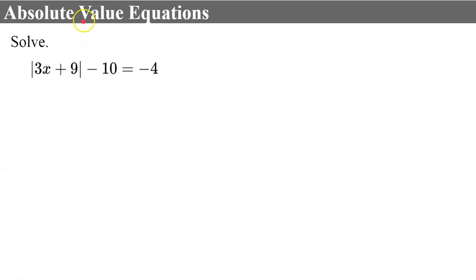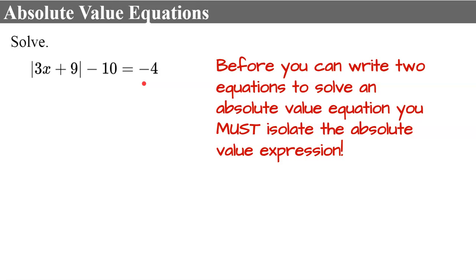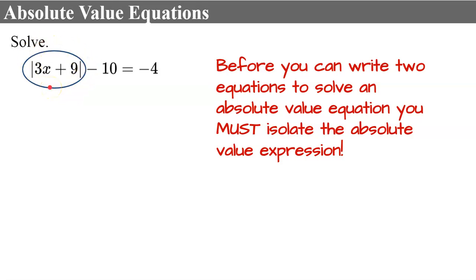Let's look at this absolute value equation: the absolute value expression of 3x plus 9, subtract 10, equals negative 4. What's different about these equations is that before you can write your two equations to solve the absolute value equation, you must first isolate the absolute value expression. The absolute value expression is just the expression inside the absolute value signs — we have to use inverse operations to get it on the side of the equal sign all by itself.